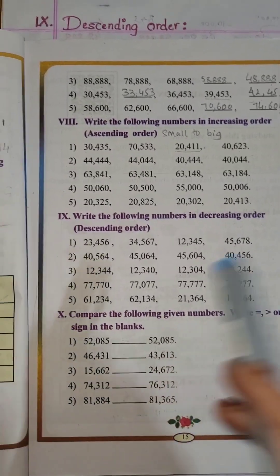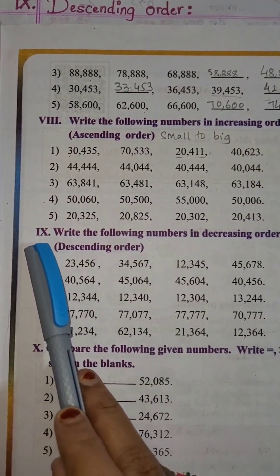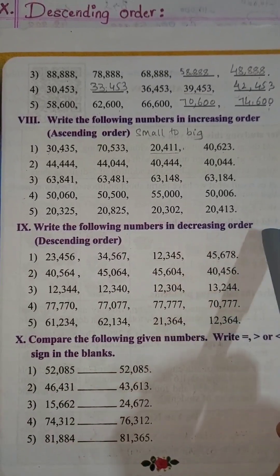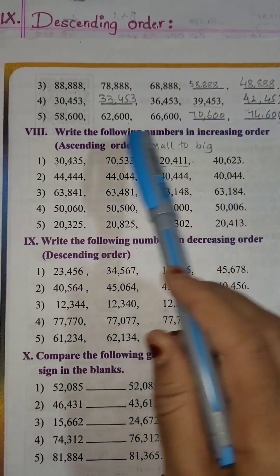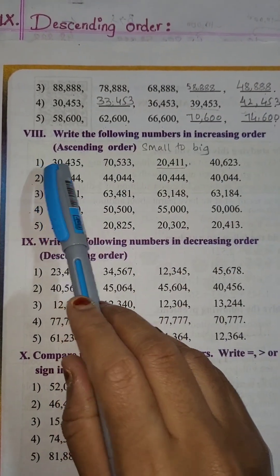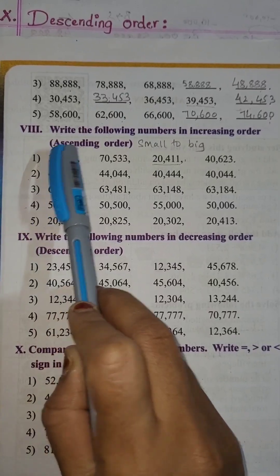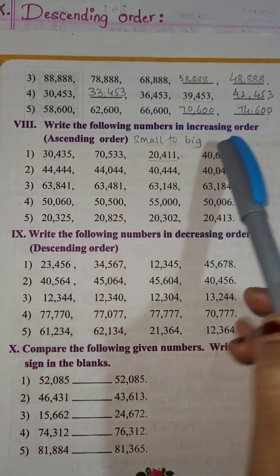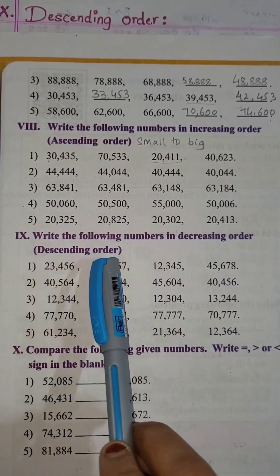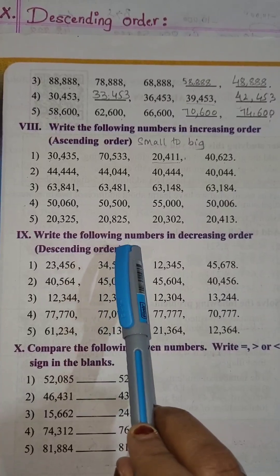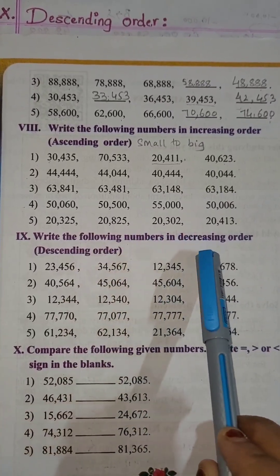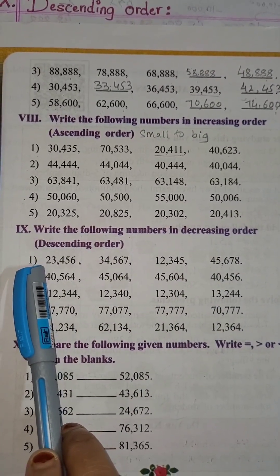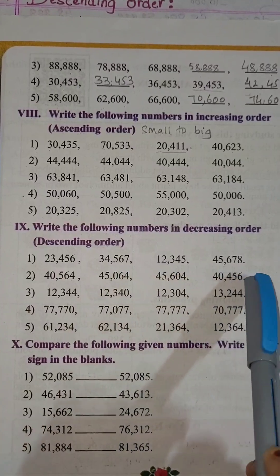So let's start with the next main — the 9th main: write the following numbers in decreasing order. So previously we have done writing numbers in increasing order, that is ascending order, small to big. This is the reverse. Descending order means it is big to small. Here we have to write the number which is bigger first.